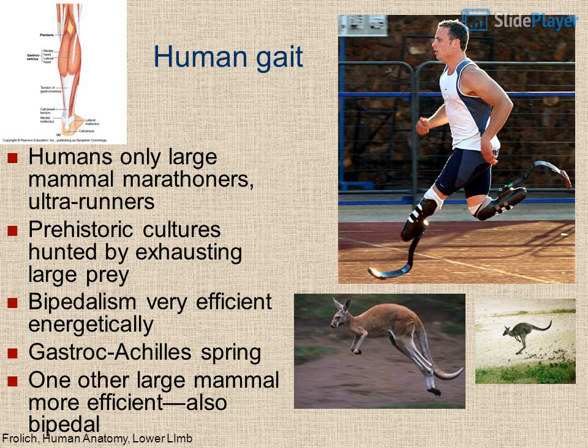Human gait: humans are the only large mammal marathoners and ultra-runners. Prehistoric cultures hunted by exhausting large prey. Bipedalism is very energetically efficient. The gastrocnemius and Achilles tendon act as a spring. One other large mammal is more efficient — and it is also bipedal.